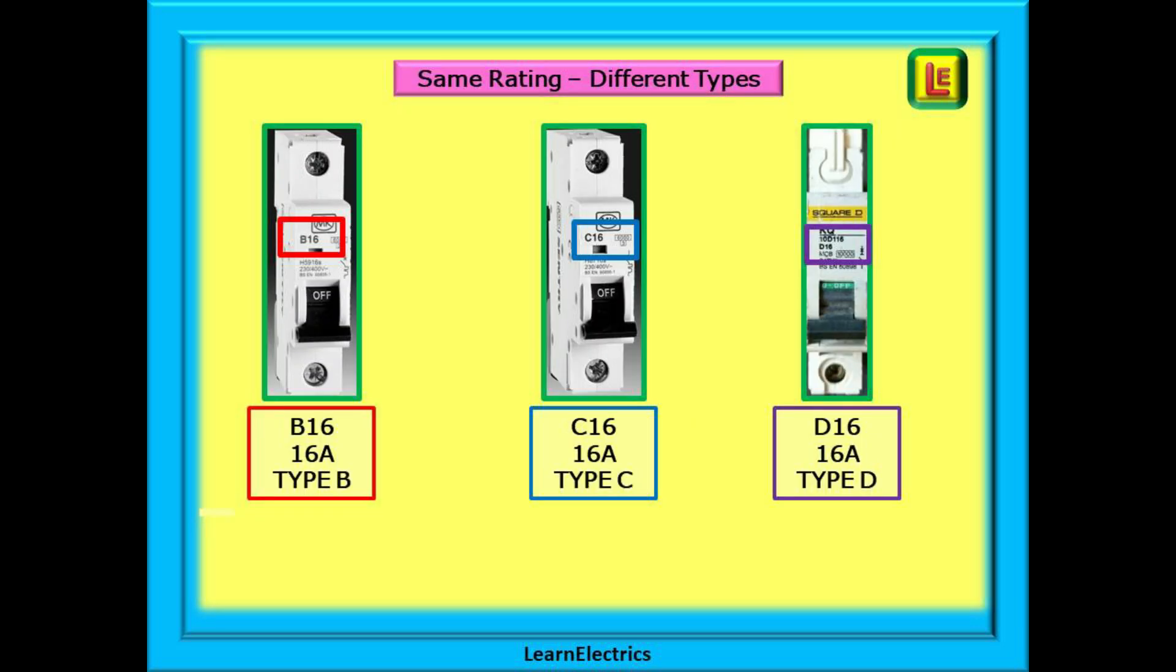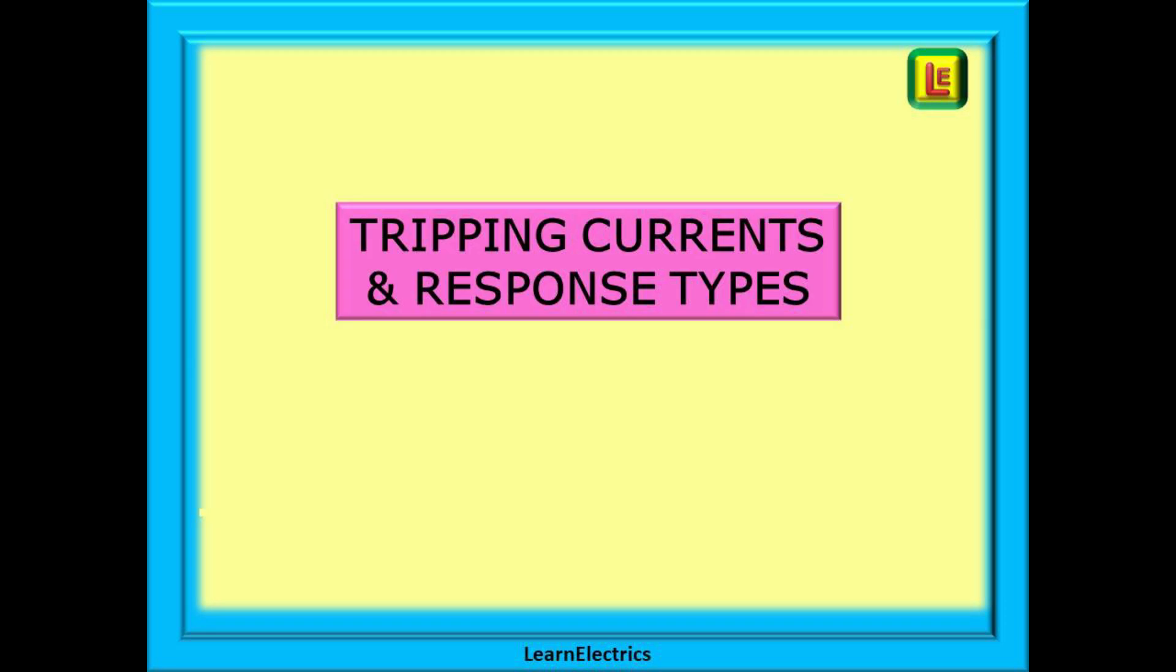We can have the same amp rating of MCB with different type numbers or letters. A B16 device has a 16 amp current rating and a type B response curve. A C16 device has the same 16 amp current rating but a type C response curve. And a D16 device will still have a 16 amp current rating but with a D type response curve. So let's have a look at the tripping current and how this works with the response curves.